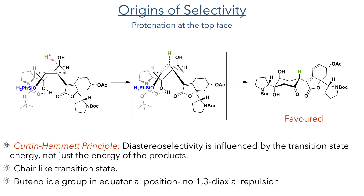We can explain the selectivity of this reduction by looking at the conformations of the possible transition states. The silyl enol ether intermediate will take on a half-chair conformation with the proline occupying the more favourable equatorial position. Protonation at the top face will allow for the formation of a chair-like transition state and a product with the butenolide group in the equatorial position, the most favourable conformation for minimising 1,3-diaxial interactions.